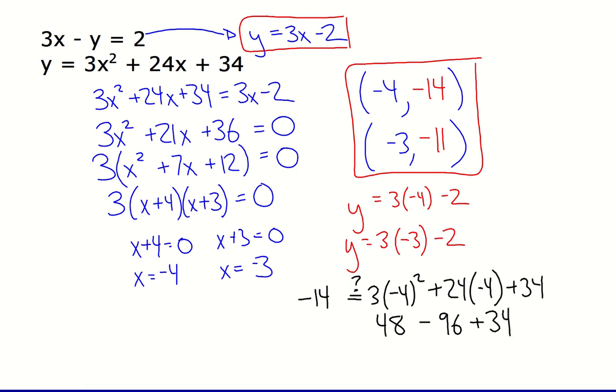And then we'll do the addition and subtraction in order from left to right. So 48 minus 96 would be negative 48. And negative 48 plus 34 makes negative 14. So we weren't sure. Yep, that one's true. Negative 14 equals negative 14. So that proves, or at least verifies, that negative 4, negative 14 is a solution to that system.